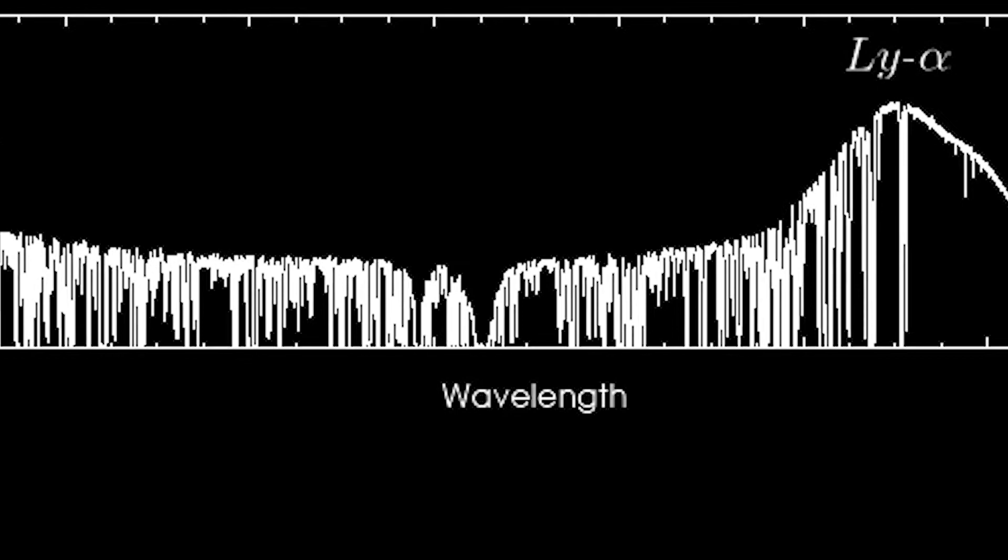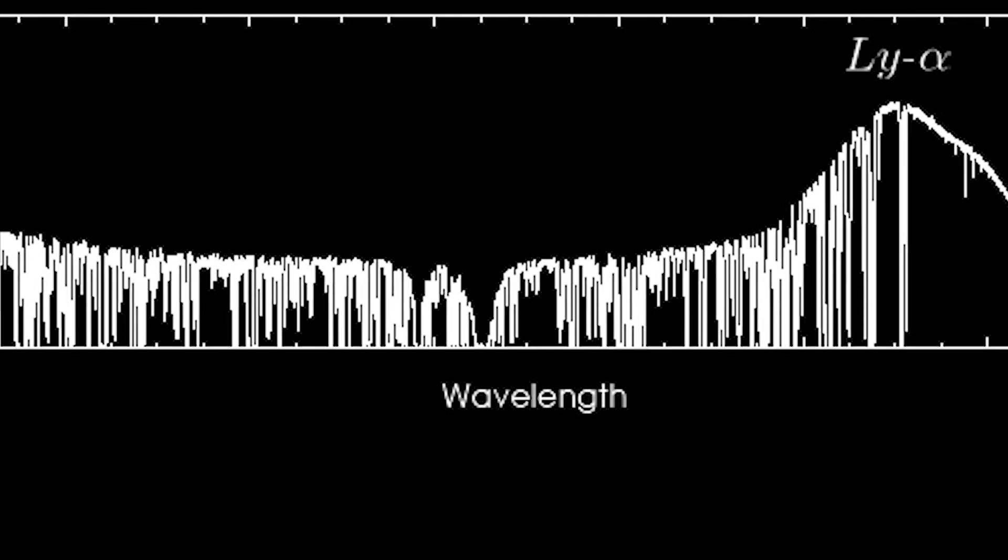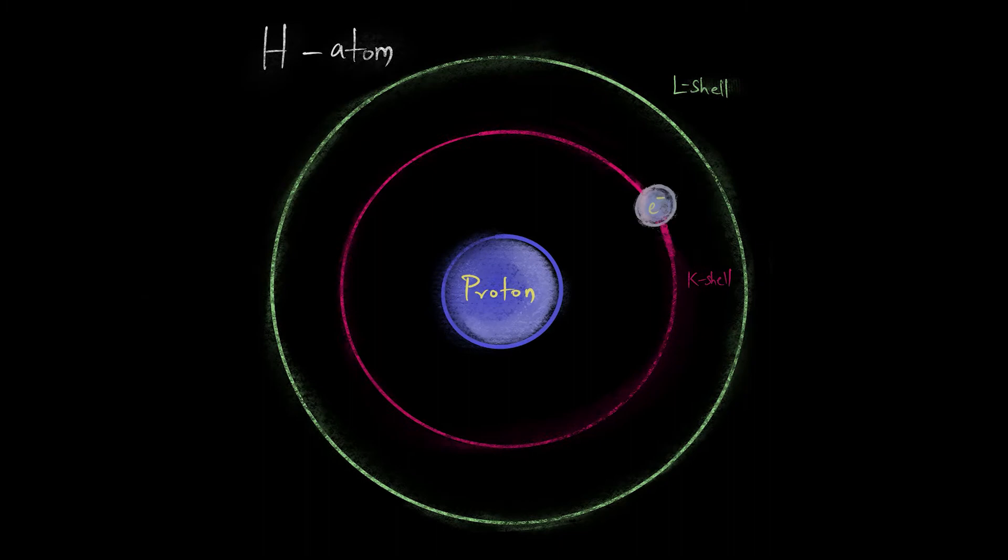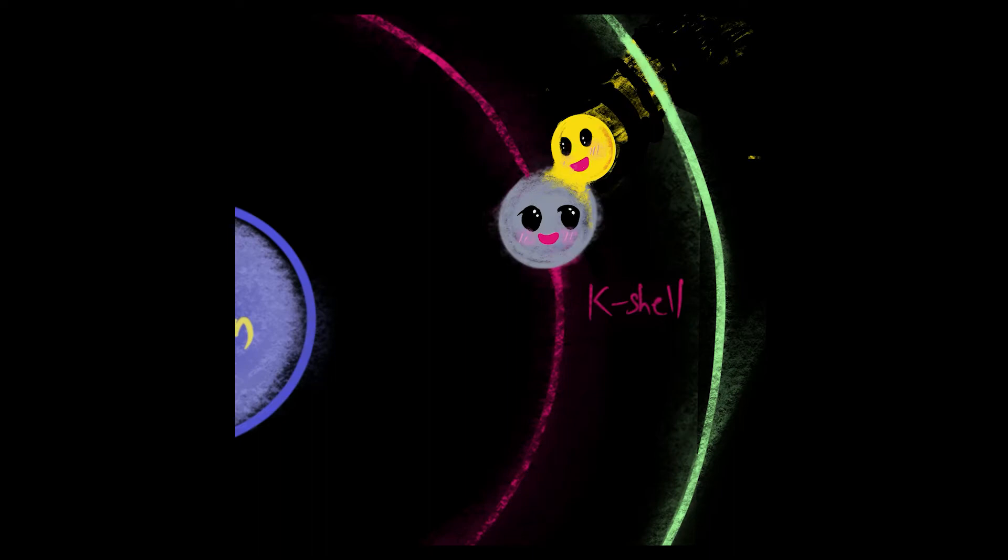In atomic physics, the interaction of photons with atoms is a two-way street. When an electron jumps to a lower orbit, a photon is created. Conversely, the atom can also absorb a photon of the right energy, causing the electron to jump to a larger orbit.